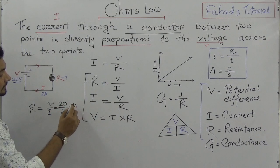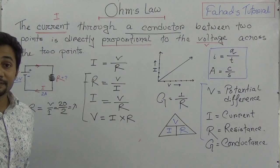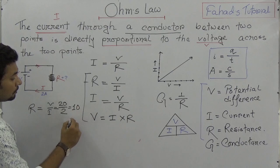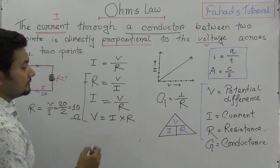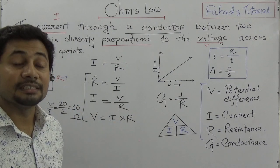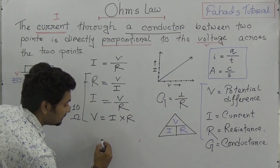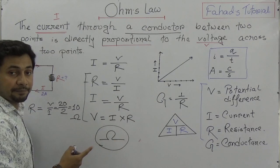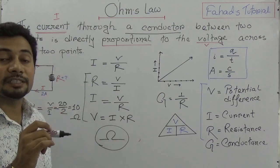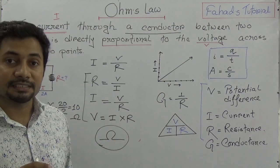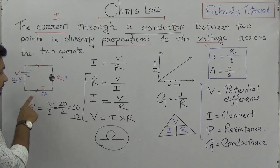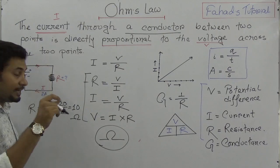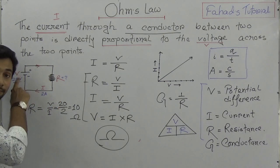The unit of resistance is ohm. Ohm is expressed using the Greek letter omega (Ω). So through this symbol we express the unit of resistance, which is ohm. Therefore, if you want 2 amperes of current through a circuit applying 20 volts, you need to use 10 ohms of resistance.